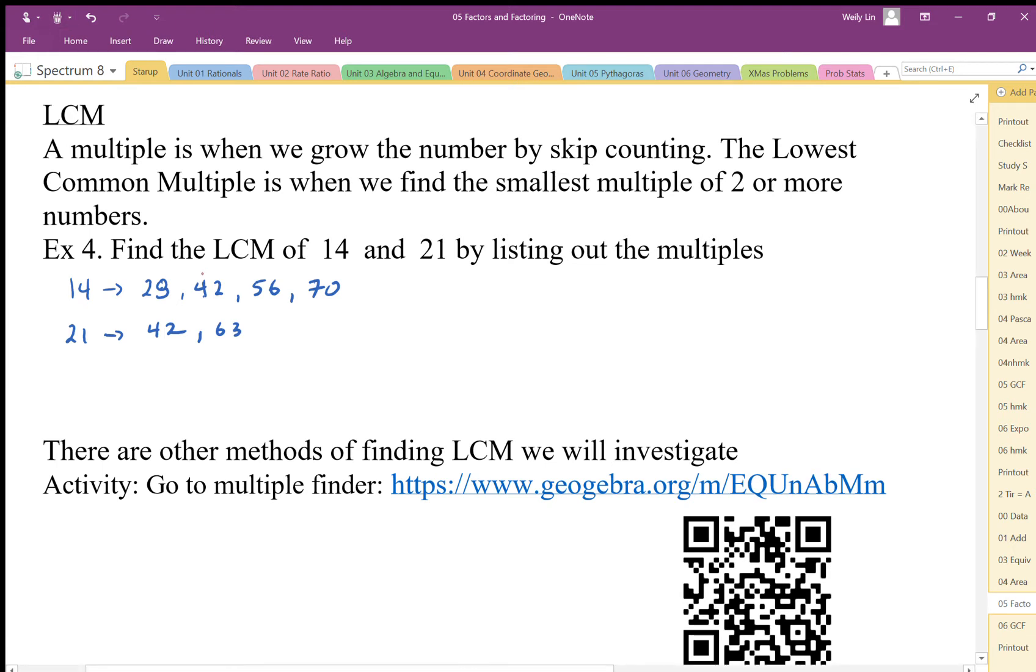It's important to know that although that's the first multiple, there are going to be more that are going to be common. For example, if I kept going, 84 will be another common multiple. I'm going to hit another common multiple when I hit 98, 112, 126 - that will be the next one because this one's going to go to 105 and 126.